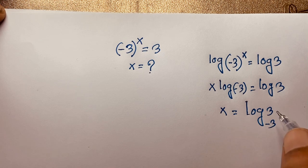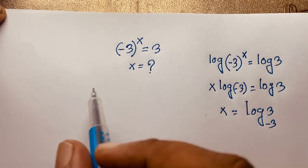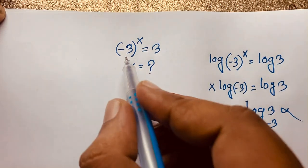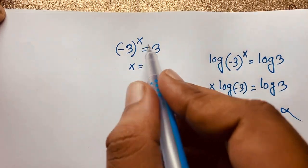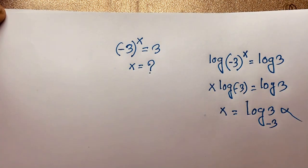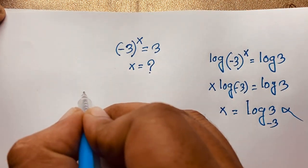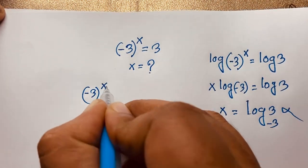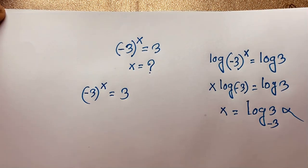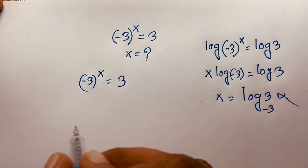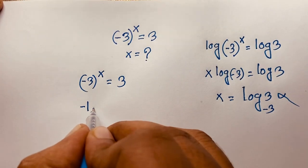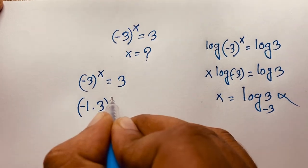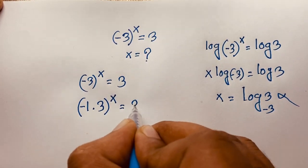So we'll need a real solution. You can't solve this question with that method. Here, minus 3 to the power of x is equal to 3. We can write minus 3 as minus 1 times 3, so it becomes (minus 1 times 3) to the power of x is equal to 3.